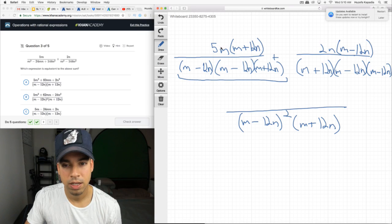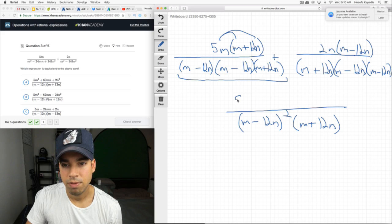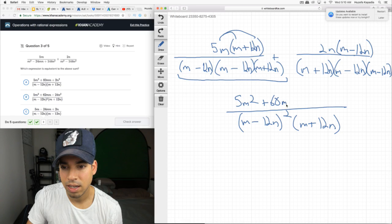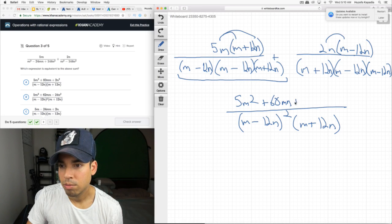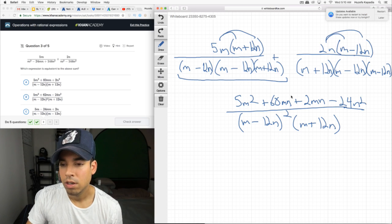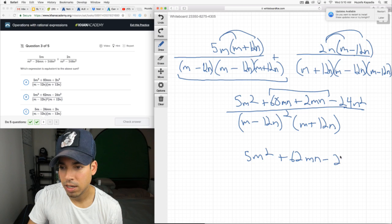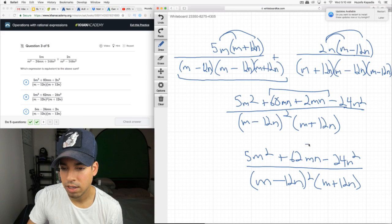And, I'm going to rewrite the common denominator now as M minus 12N squared, because it's two of these, times M plus 12N. And, you can see from a quick glance, that's what they did in their answers, so this is going to make it easier. And then, over, this is going to be, let's see, 5M squared. Because, now I'm consolidating this as one fraction, 5N squared plus 60MN plus 2MN minus 24N squared, which is this.